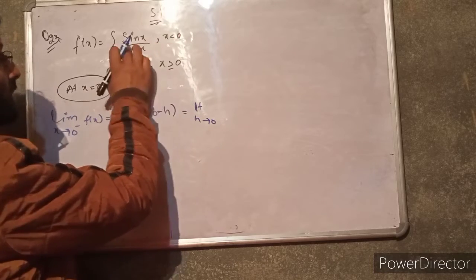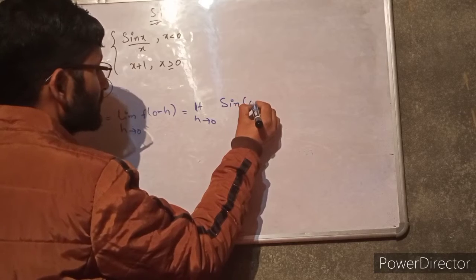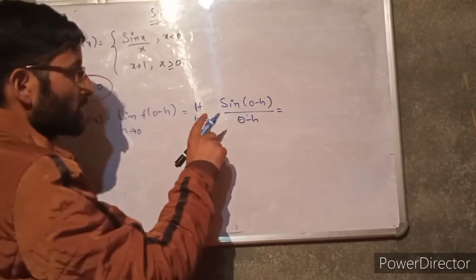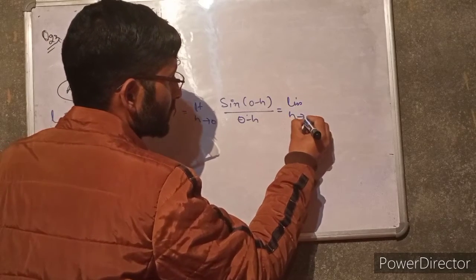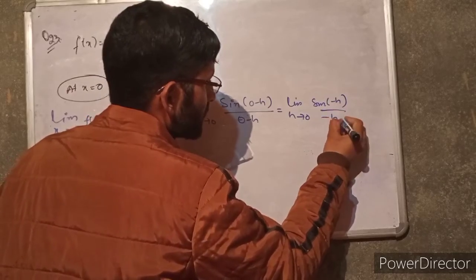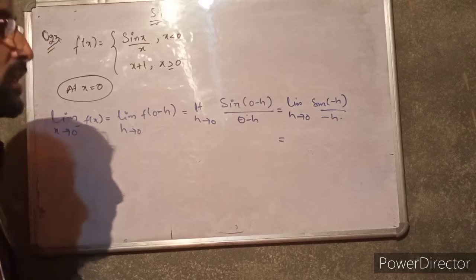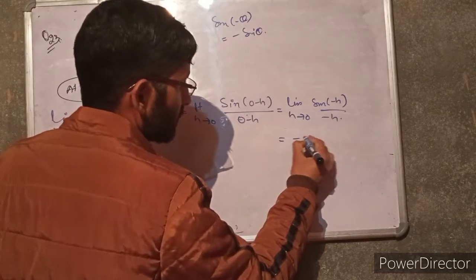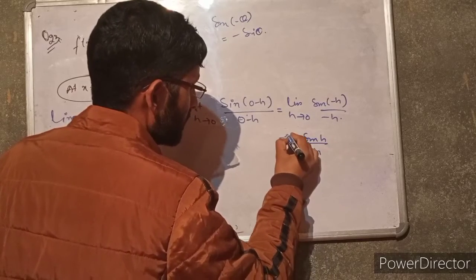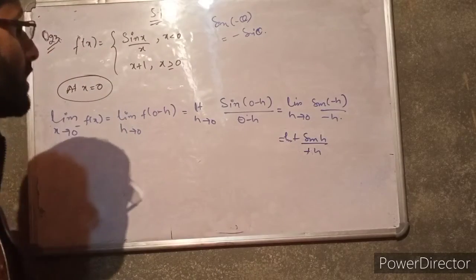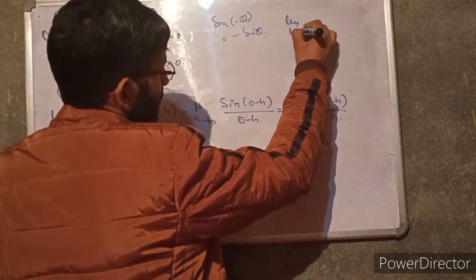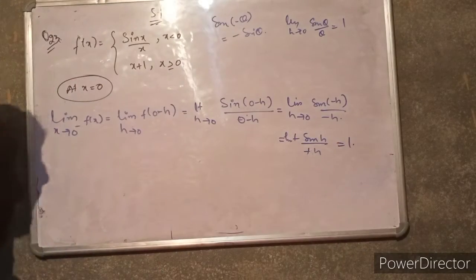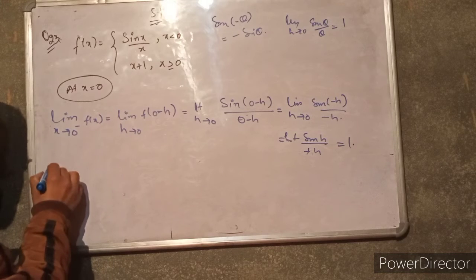For the left-hand limit, we compute limit h tends to 0 of sin(0 minus h) divided by (0 minus h), which gives us limit h tends to 0 of sin(minus h) divided by minus h. Using the property sine of minus theta equals minus sine theta, this becomes minus sine h divided by minus h. The two negatives cancel, giving limit h tends to 0 of sine h divided by h, which equals 1, using the standard formula limit theta tends to 0 of sine theta divided by theta equals 1.